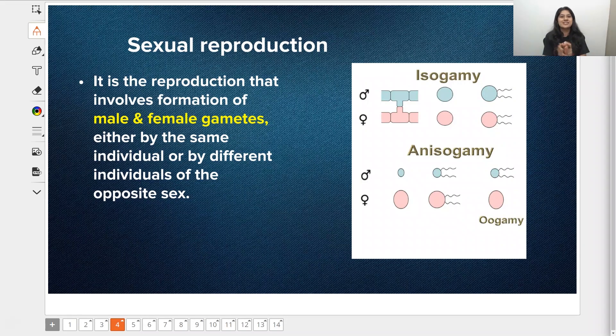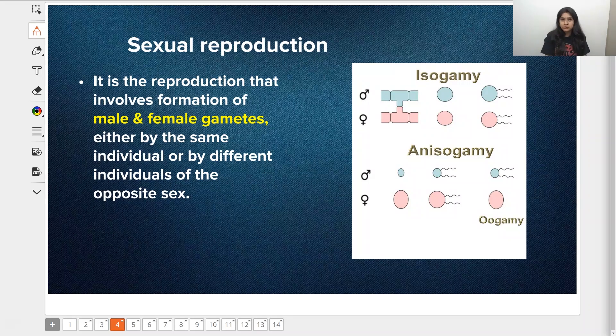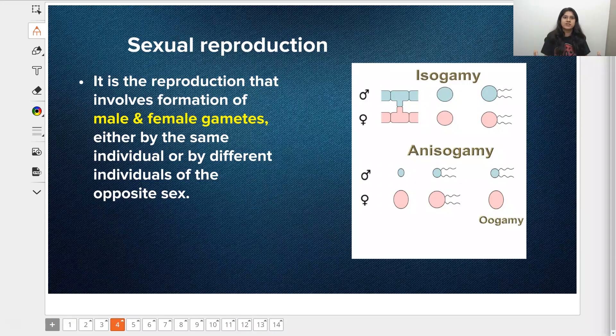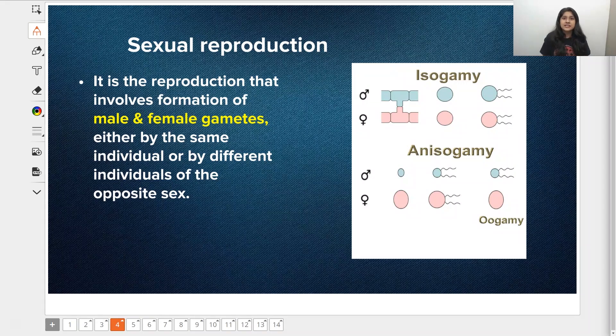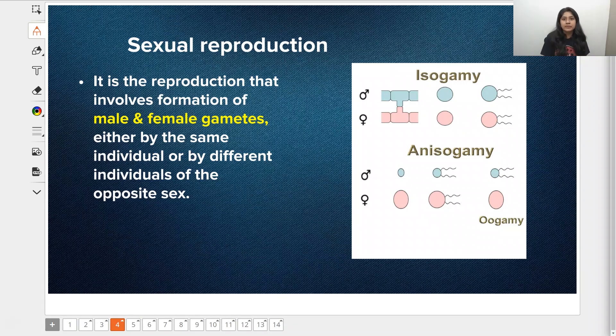Sexual reproduction is a more complex process than asexual reproduction. It involves more than two individuals - one individual produces a different gamete and one produces a different gamete. Usually, it's the female and the male individual that are required in sexual reproduction.